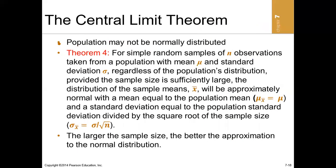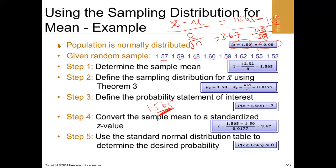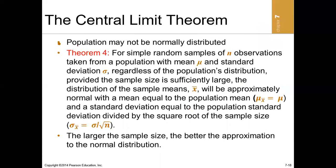Now let's talk about the central limit theorem, which is theory four of the theories of sampling distributions. Before we go there, note that in a test you may need to compute the sample means yourself, as shown in part one of the series.